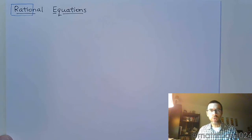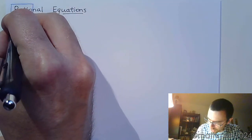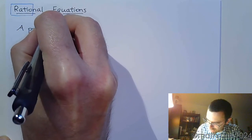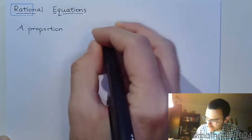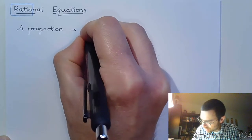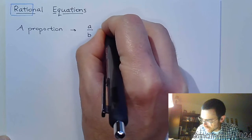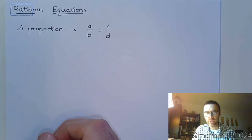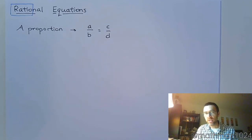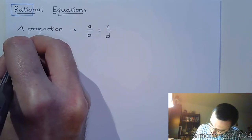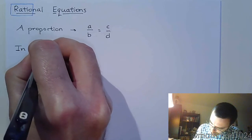But the first type of rational equation that you come across is what's called a proportion. And a proportion is fairly simple. A proportion is going to be an equation that has two fractions that are equal to each other. So A over B is equal to C over D. And so if you have this setup where a fraction is equal to a fraction, then here's what we know. In a proportion...